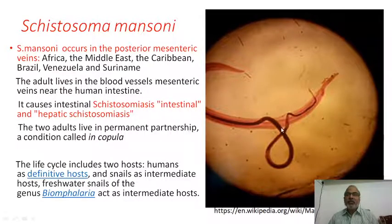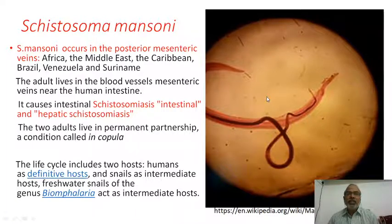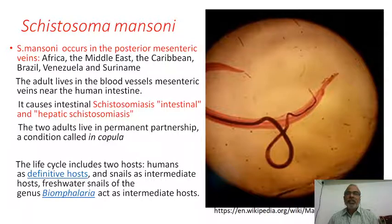Schistosoma mansoni occurs in the posterior mesenteric veins and spreads in African countries, Middle East, Caribbean, Brazil, Venezuela, and Suriname. The adult lives in blood vessels, especially the mesenteric veins near the human intestine. It causes intestinal schistosomiasis and hepatic schistosomiasis, similar to S. japonicum.